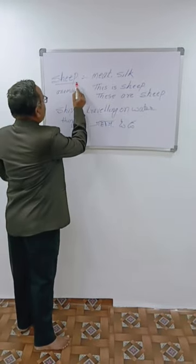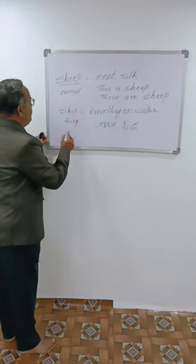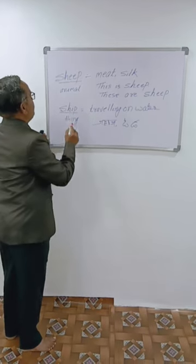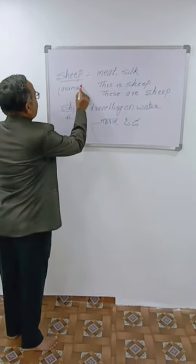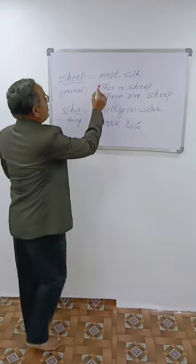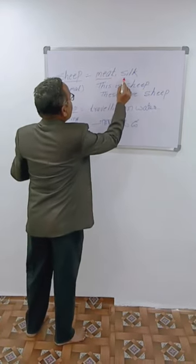The difference between sheep, S-H-E-E-P, and ship, S-H-I-P. Sheep is an animal which is made for meat.